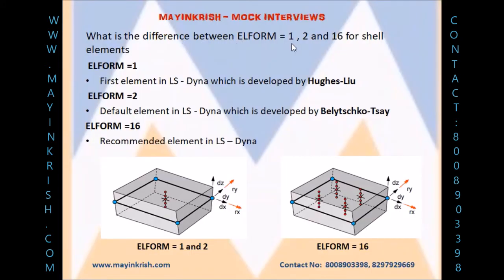What is the difference between EL form 1, 2, and 16 for shell elements? EL form 1 is the first element in LSDyna, which is developed by Fugis Liu. It's an under-integrated element which has only one integration point at the center. EL form 1 is 2.5 times more expensive than EL form 2 in terms of computational time, but effective when large deformations are expected.